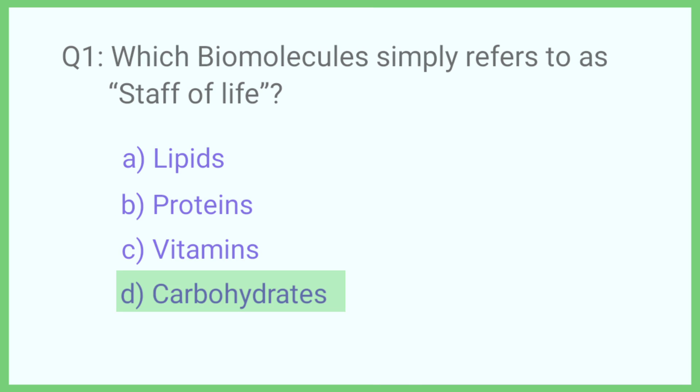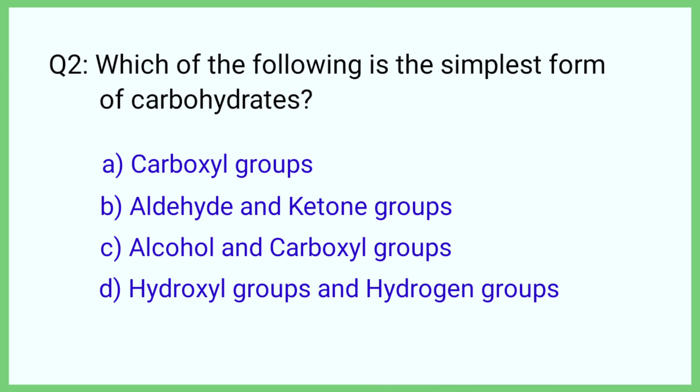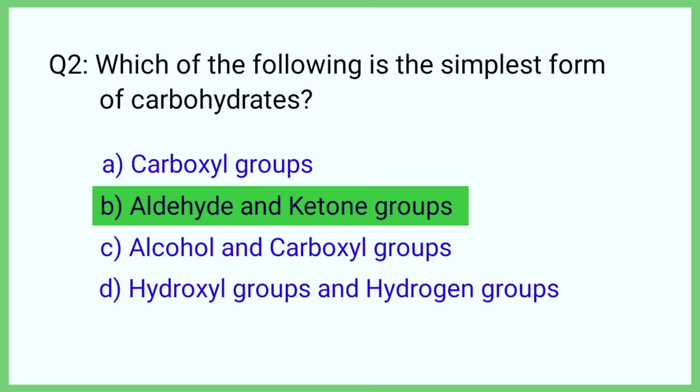Question number 2. Which of the following is the simplest form of carbohydrates? The correct answer is option B: Aldehyde and Ketone groups.